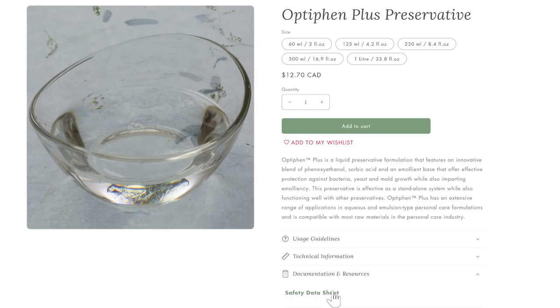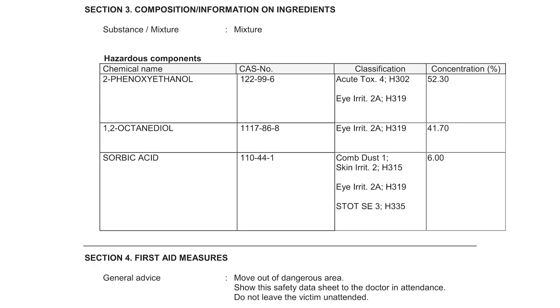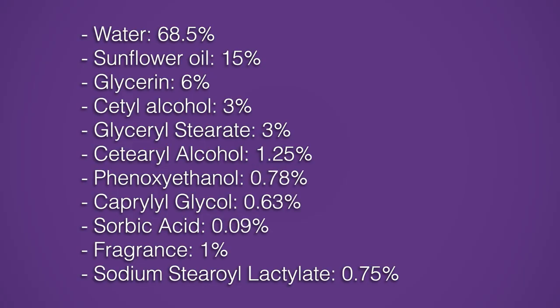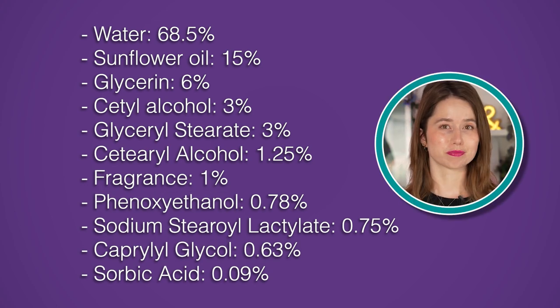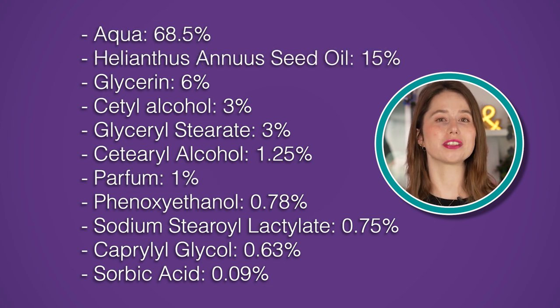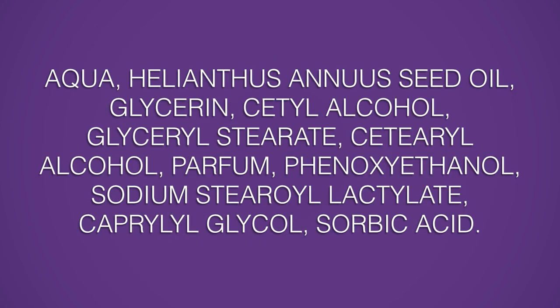Now let's do this again with the Optifin Plus. It is approximately 52.26% phenoxyethanol, 41.74% caprylyl glycol, and 6% sorbic acid. We'll add those values to our list and then rearrange it. Now we've got everything on the ingredient list and in the right order. All that's left is a couple of small changes to switch everything into INCI and meet Health Canada's labelling guidelines. You can see that this breaks up the compound ingredients and scatters the parts throughout the overall ingredient list, somewhat disguising the original compound ingredients. Now that you know this, keep an eye out for clusters of ingredients you recognize in commercial ingredient lists — you'll feel like Sherlock Holmes when you do.